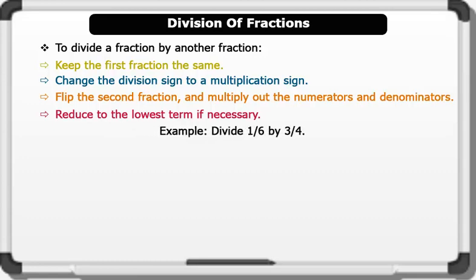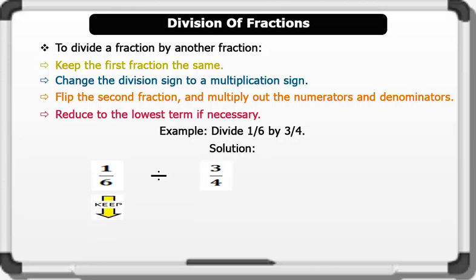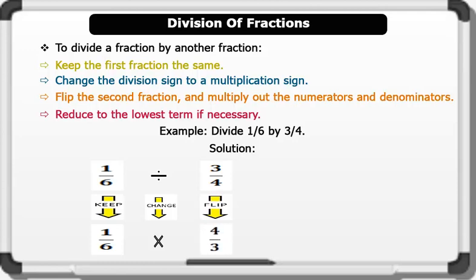Let's see an example: divide 1 over 6 by 3 over 4. Solution: 1 over 6 divided by 3 over 4 — we keep the first fraction, 1 over 6, the same. We change the division sign to a multiplication sign, then flip 3 over 4 to give us 4 over 3. We multiply out: 1 times 4 over 6 times 3 gives us 4 over 18. Reducing to the lowest term by dividing through by 2 equals 2 over 9. That's brilliant!